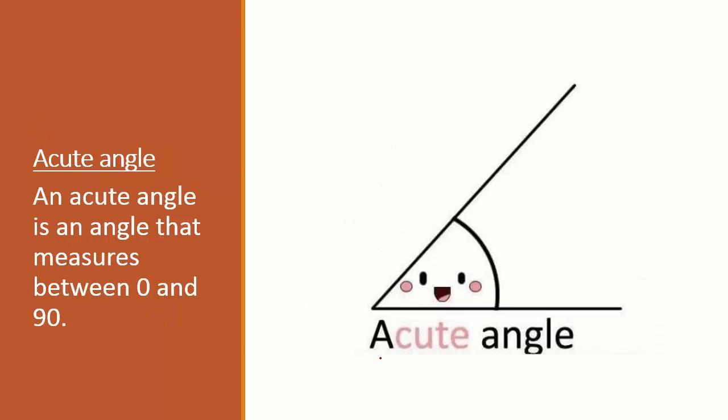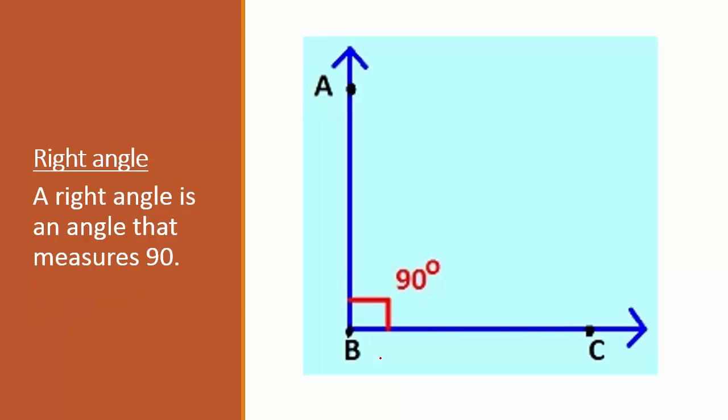Acute angle. An acute angle is an angle that measures between 0 and 90 degrees. Right angle. A right angle is an angle that measures 90 degrees exactly.